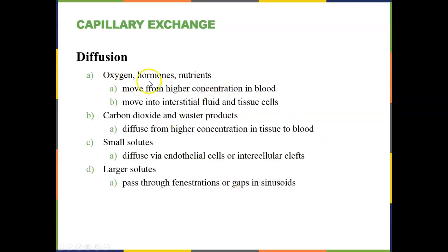Diffusion, which you should already know, is movement of materials from higher to lower concentration down a concentration gradient, and there's no energy required. In general, oxygen is going to move down a concentration gradient from our capillaries into our tissues, and then waste products like carbon dioxide move from higher to lower concentration into our blood. There are also hormones and nutrients that move via diffusion into our cells, and other waste products that move away from our cells.